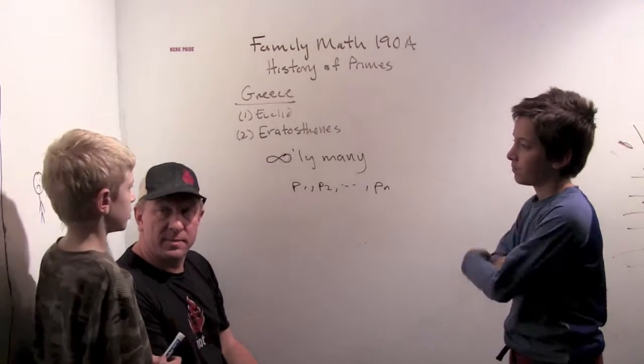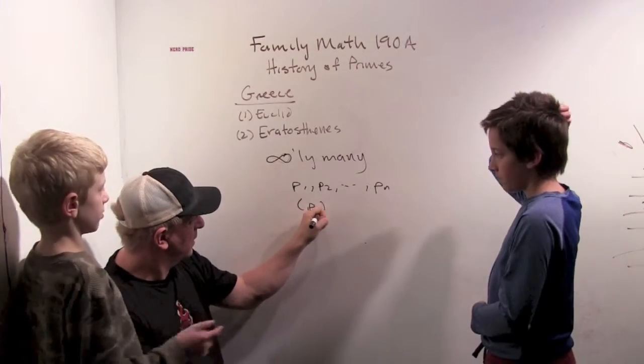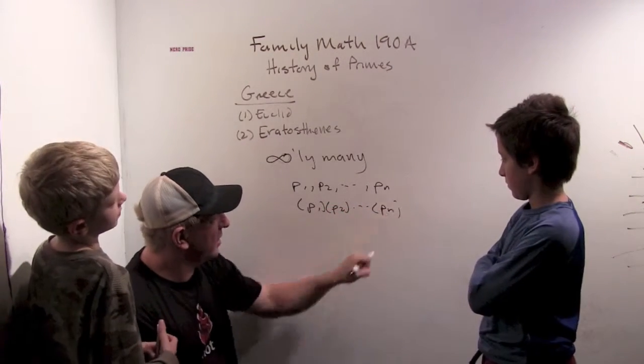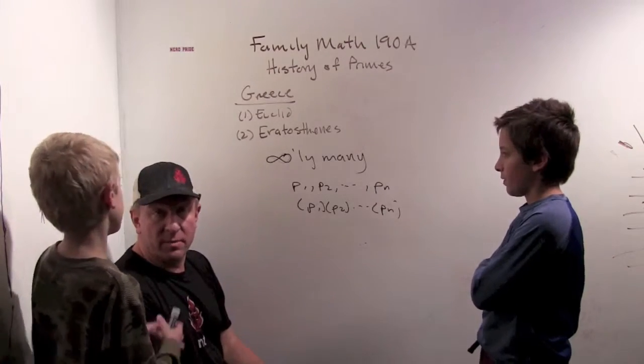Then you multiply all these primes together. So that way you have a big number that's divisible by all of the primes. You form this new number where I just multiply all of these together and that number is divisible by all of the primes.